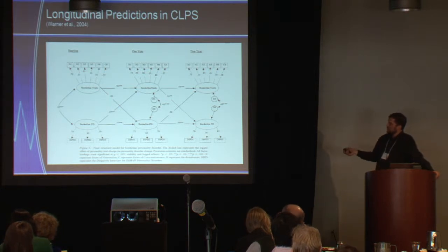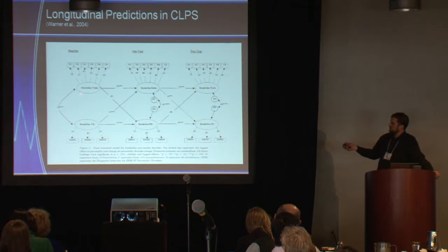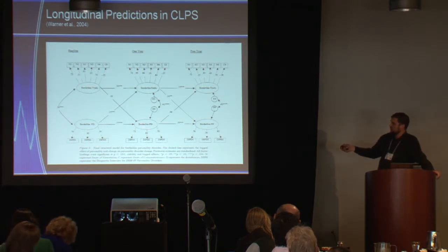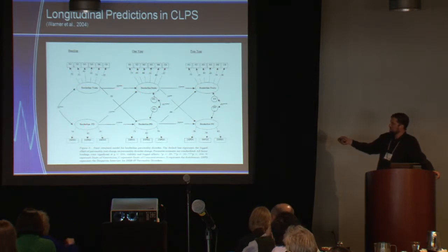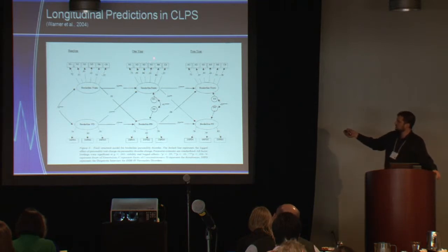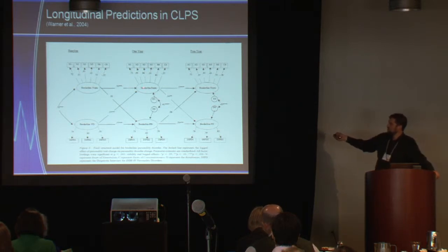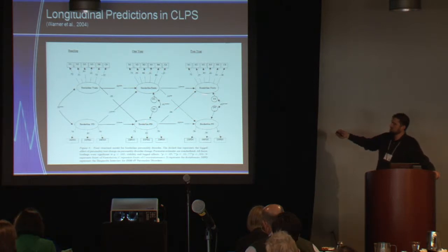And then there are the cross-lags. In a regression framework, you've got two predictors and one outcome. Traits are not predicting future PD symptoms at one year controlling for PD symptoms, whereas PD symptoms are predicting future traits controlling for traits. That pattern switches at the second lag: between one and two years, traits predict PD symptoms controlling for PD symptoms, whereas PD symptoms do not predict traits controlling for traits.